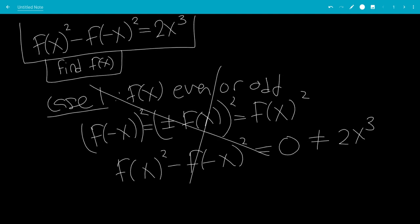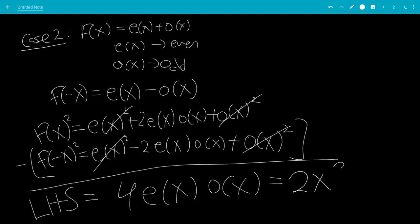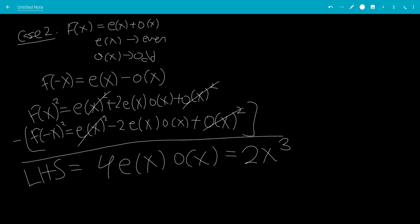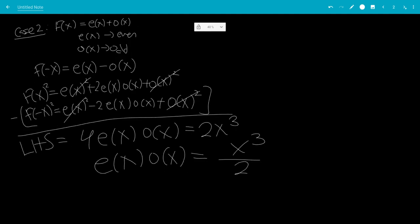In the beginning, we have 2x³ divided by 4. So e(x)o(x) will be x³/2. So that's how it simplifies.